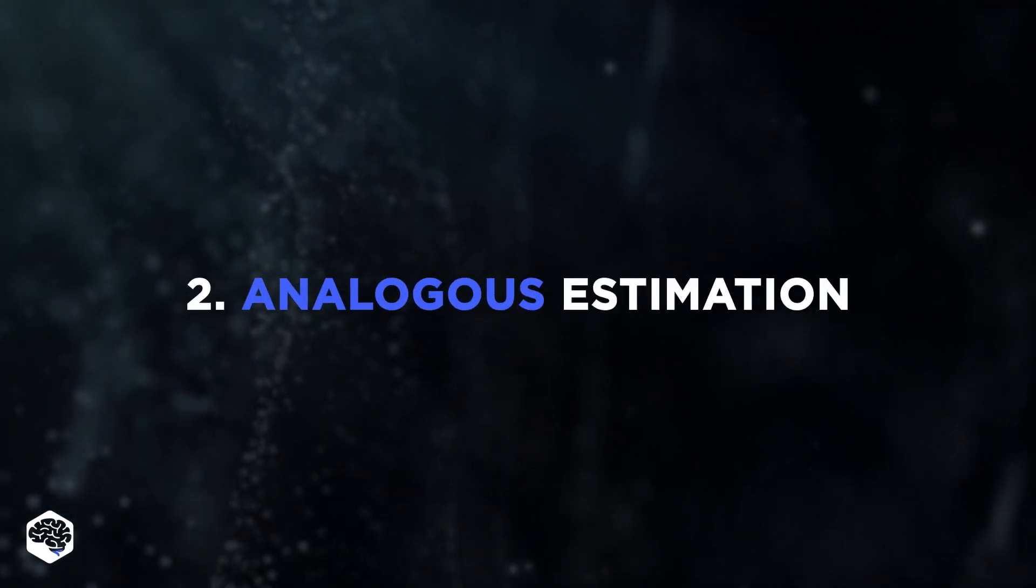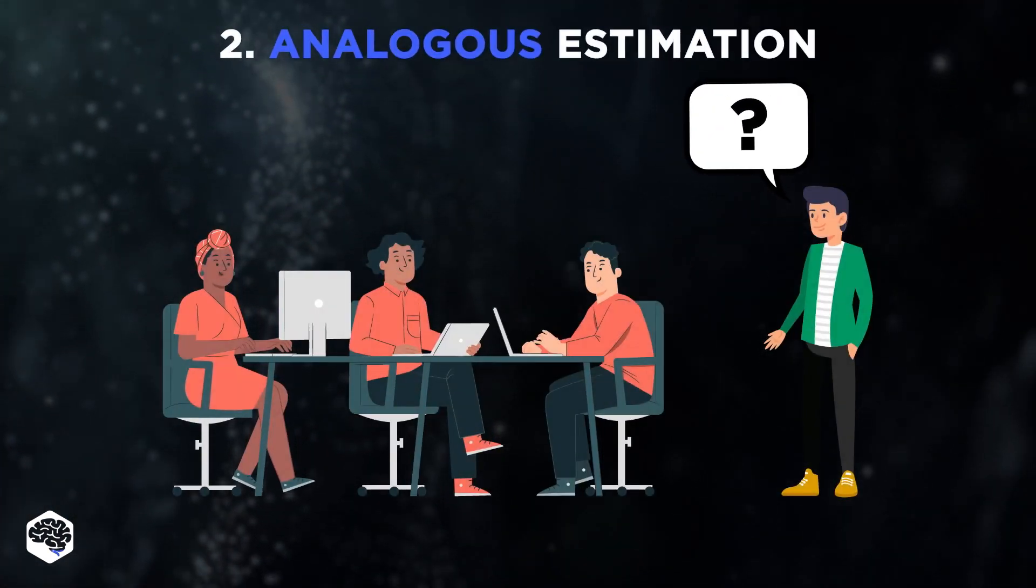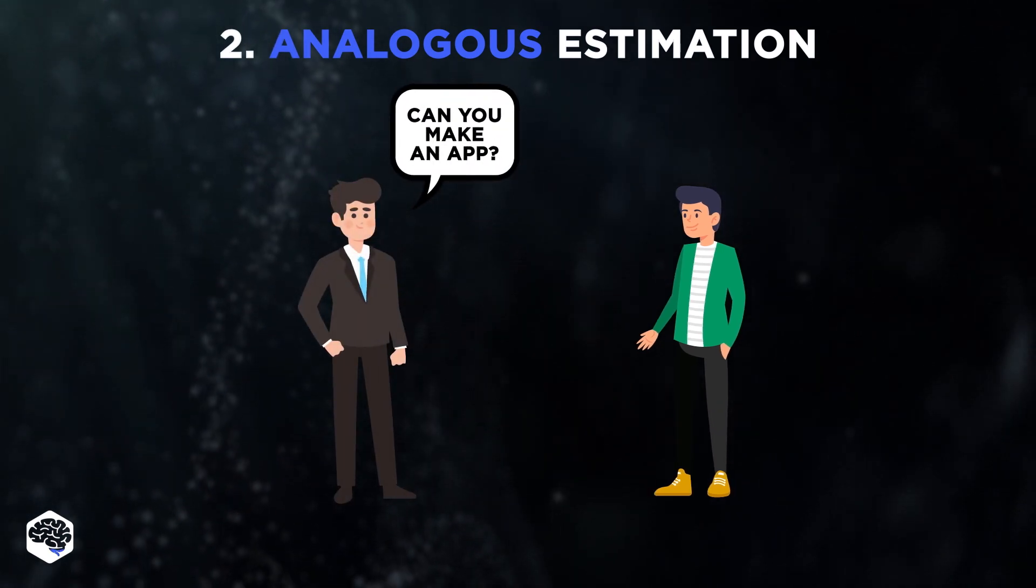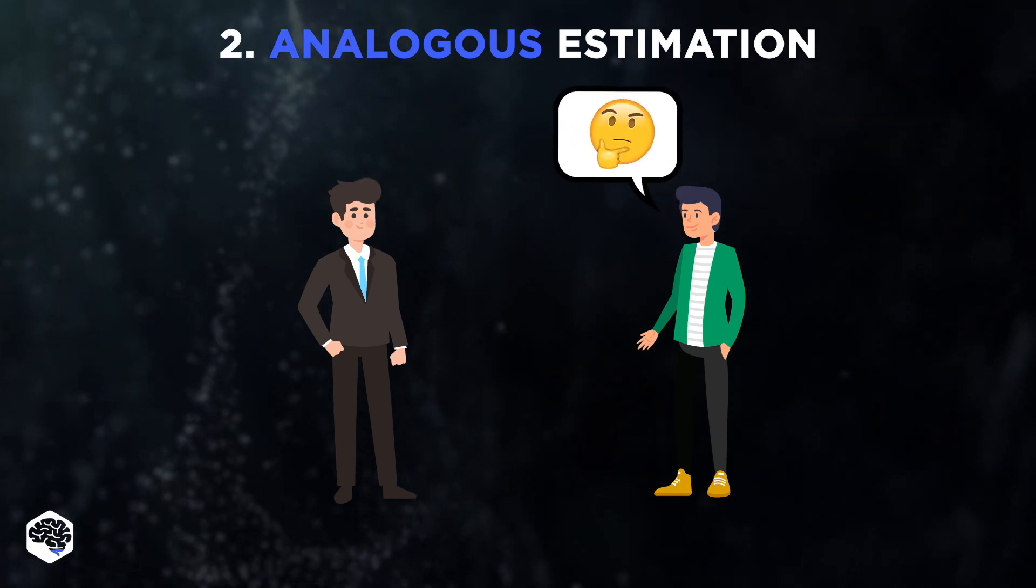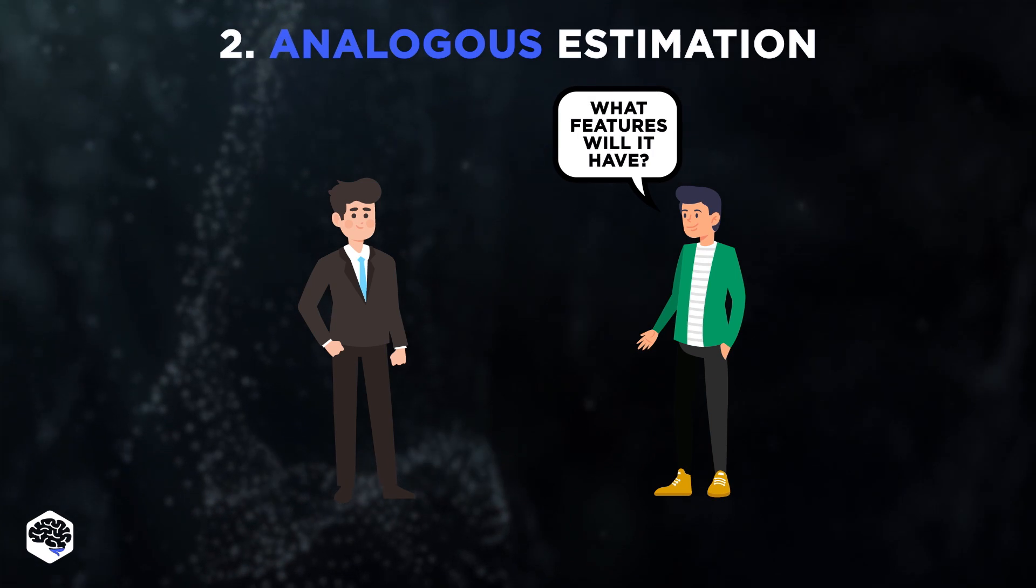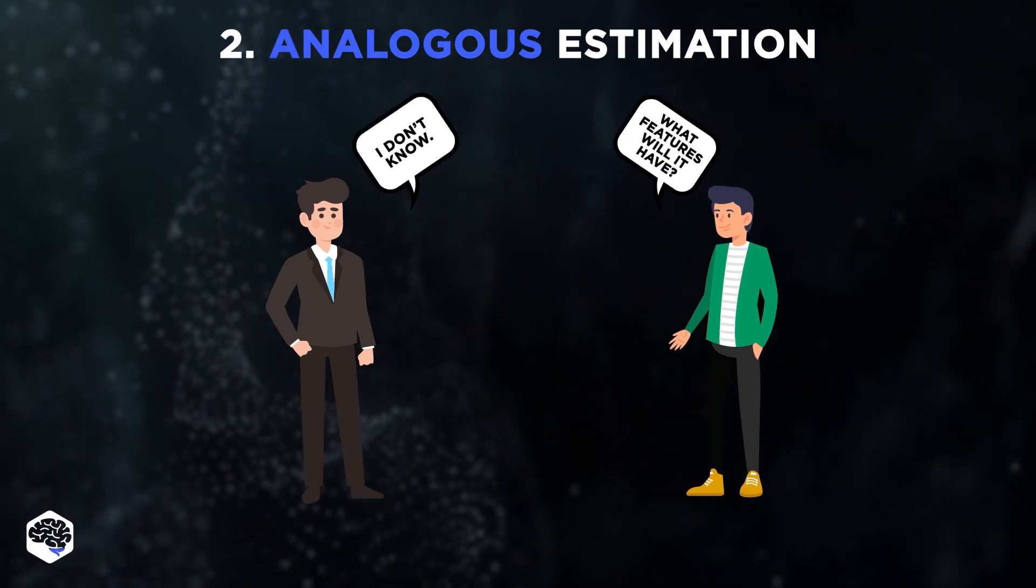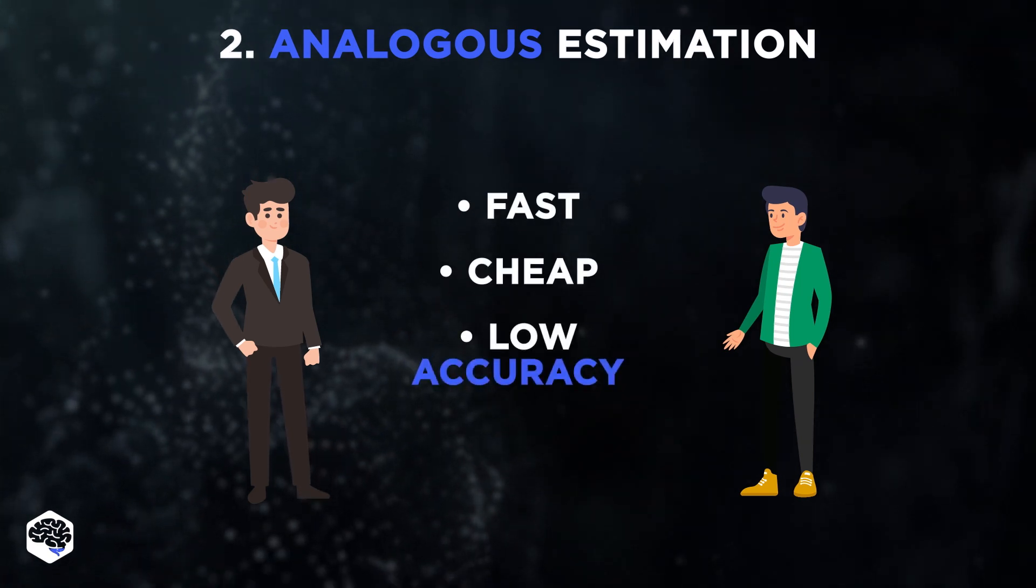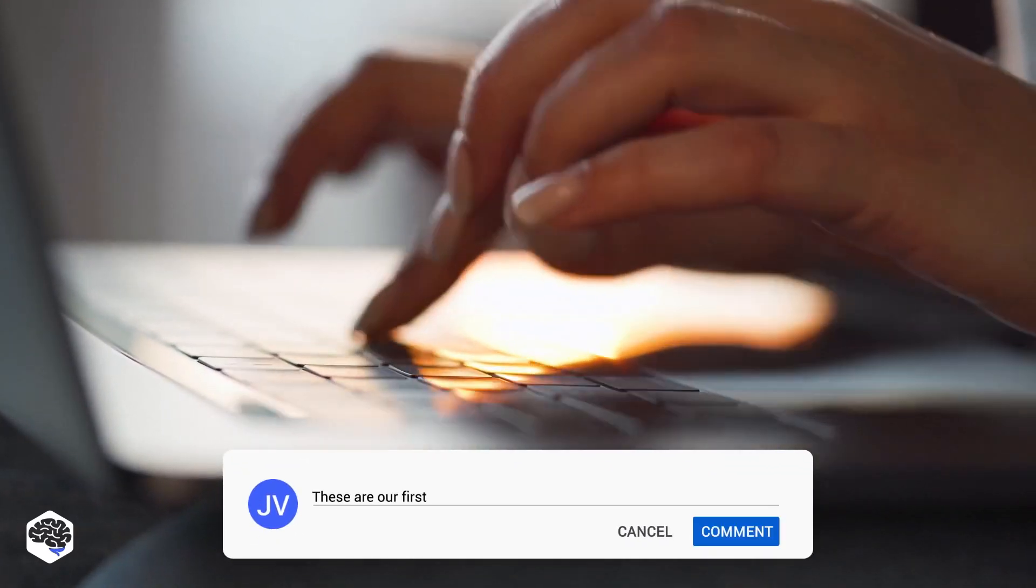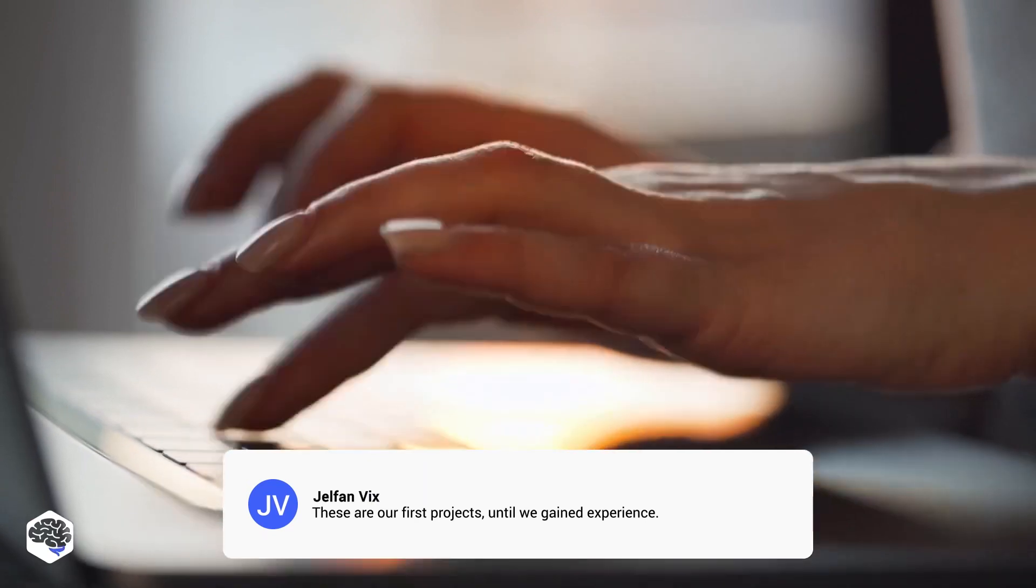The second method is Analogous Estimation. It uses data and knowledge from previous or similar projects as the basis for the assessment. Analogous Estimation is used when companies need at least some data to decide whether or not to proceed with this project. It's also used when most of the information about the project is not known yet. The accuracy of this approach is the lowest, but the fastest and cheapest. Do you know any examples where a project took way more time and budget than its estimate? Share your thoughts in the comments.